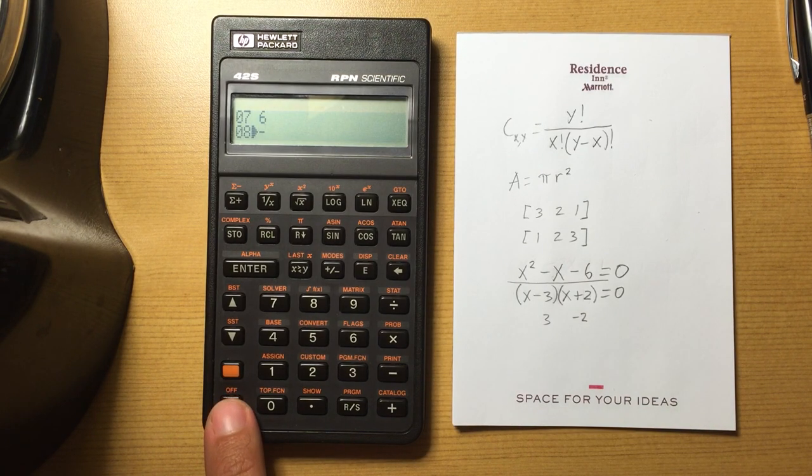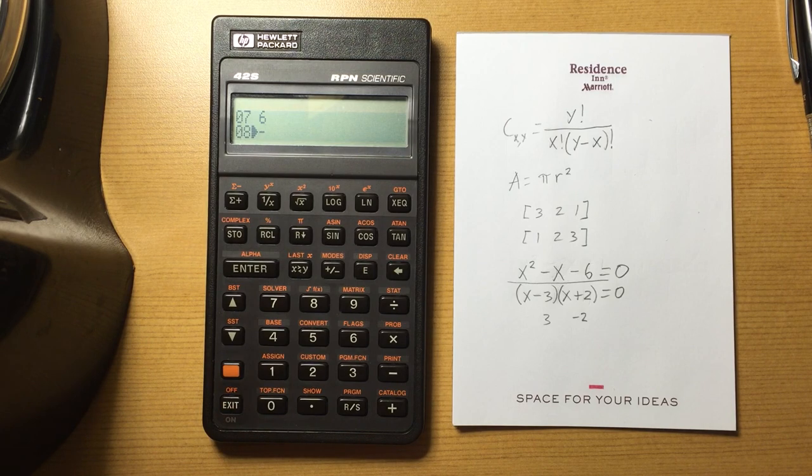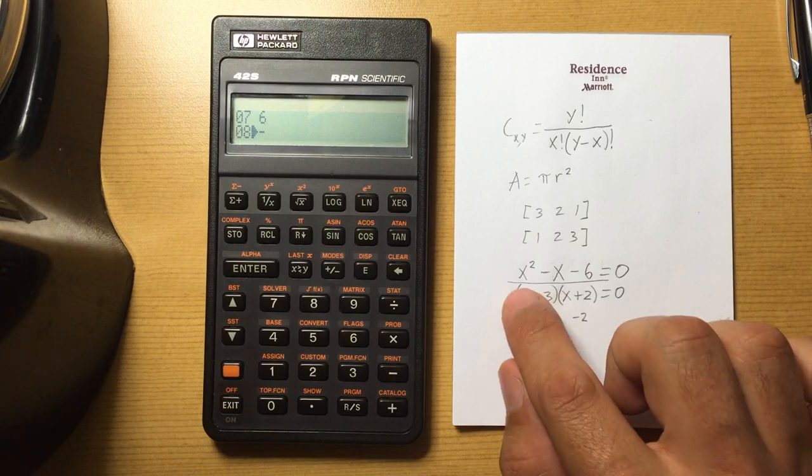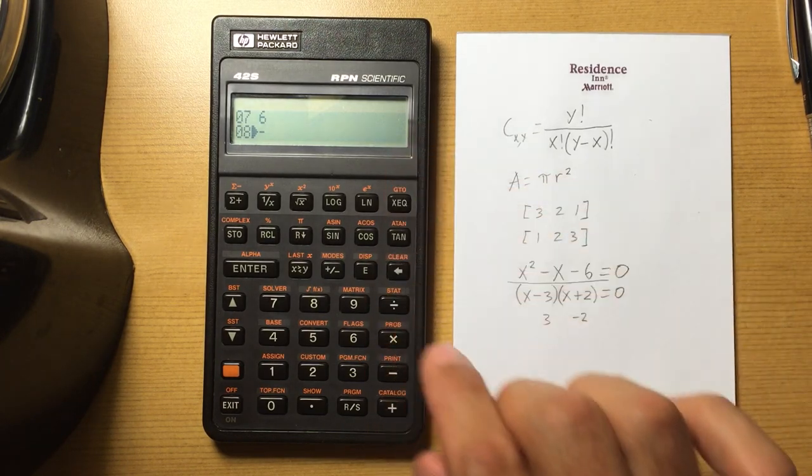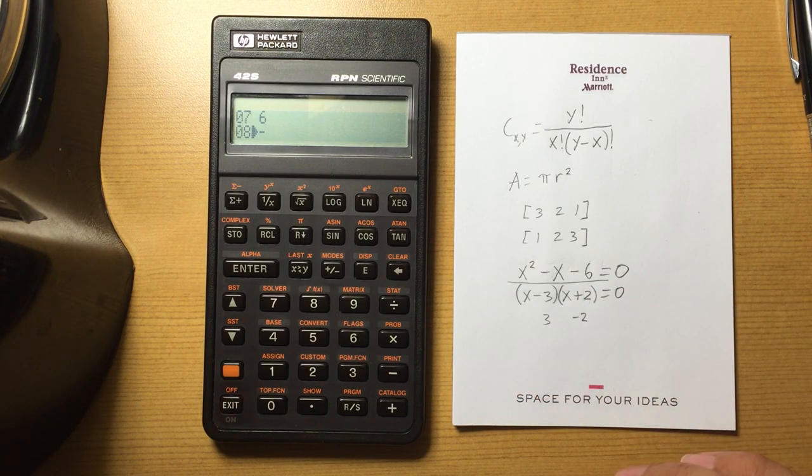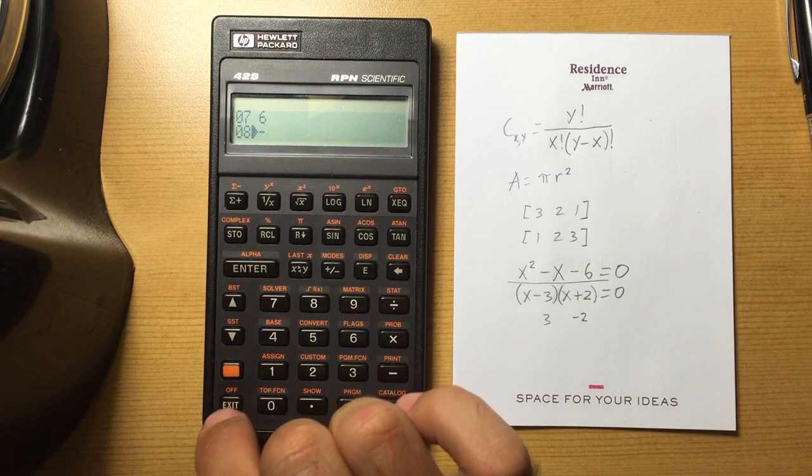So what the solver is going to be doing is it's going to be putting in a guess for x and then evaluating this function. So that guess for x is put into that x squared minus x minus 6, and then it says is that equal to 0? No, well maybe I need to go put in a different value. I'll increment it, put in a different guess.